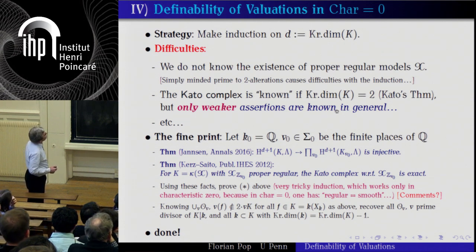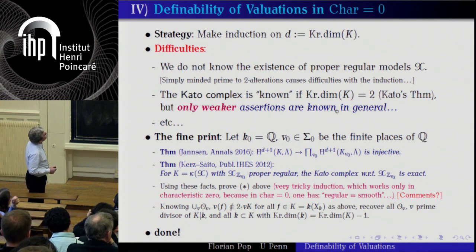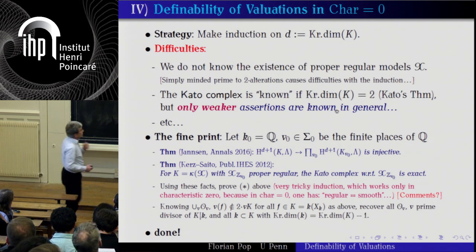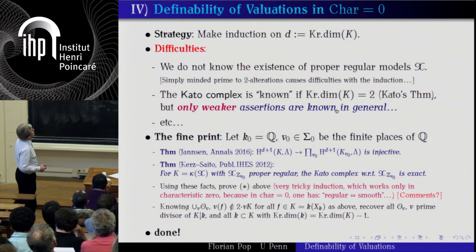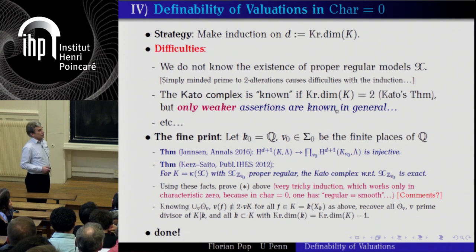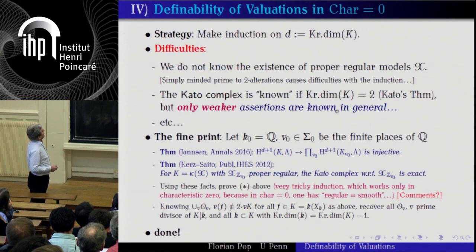Knowing these valuation rings for all F, and so on, you can describe all the valuations of K which are trivial on k. When you quantify over all possible k — which is possible by the previous results of Bjorn Poonen and myself — and quantify over all the f's, at every stage you either get garbage or a valuation ring which is a prime divisor. And that is the result.